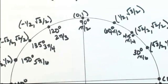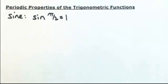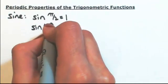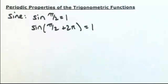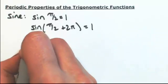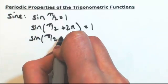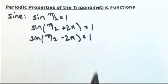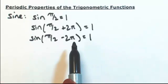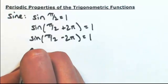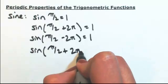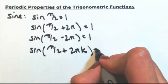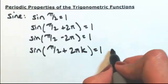So if I want to find 1 again, I have to go around again. So I could also say that sine of pi over 2 plus 2 pi is equal to 1. Or I could go back around the other way, so sine of pi over 2 minus 2 pi is 1. I could keep going around and around, adding multiples of 2 pi. So in general, sine of pi over 2 plus any multiple of 2 pi — let's call it 2 pi k — will equal 1, where k is an integer.